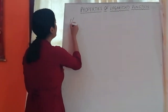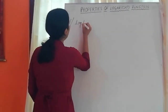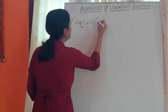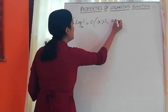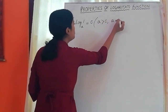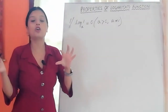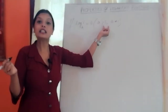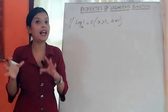Our first property: log 1 base a is equal to 0, where a is greater than 0 and a is not equal to 1. I am going to prove that log 1 base a is equal to 0.